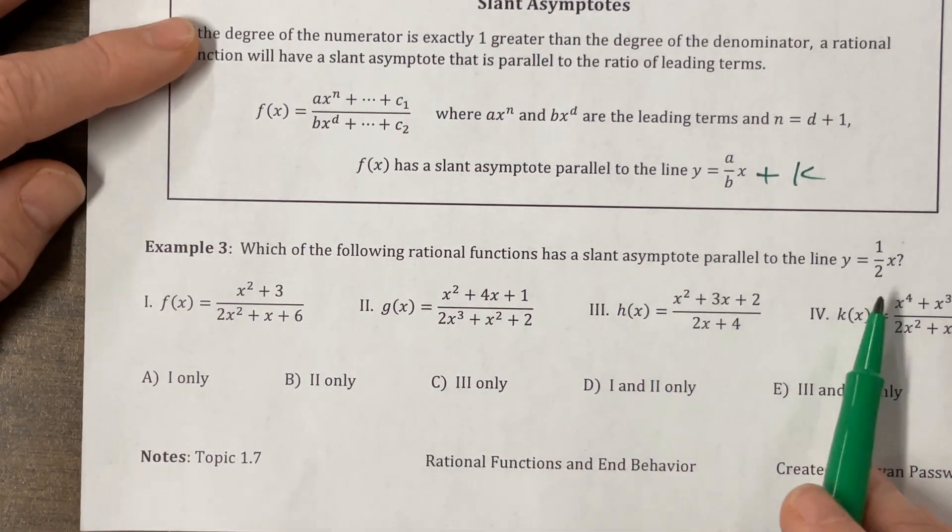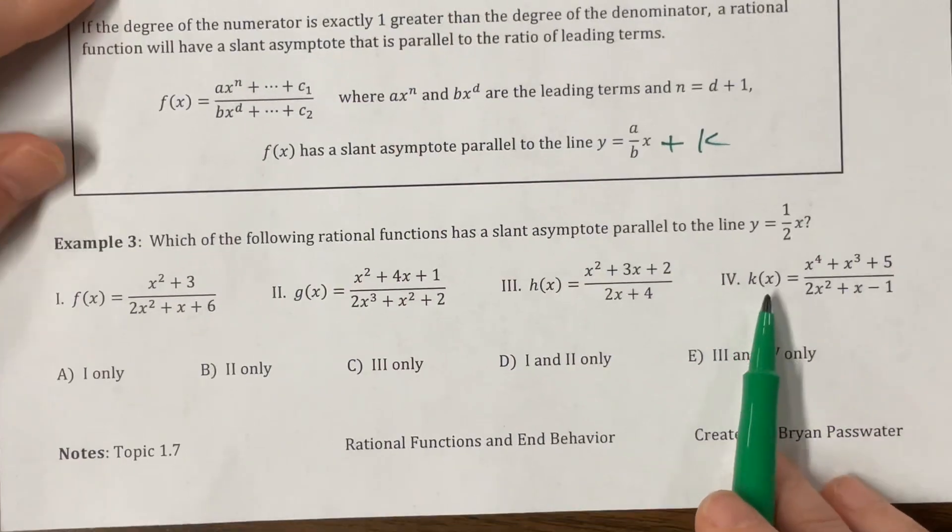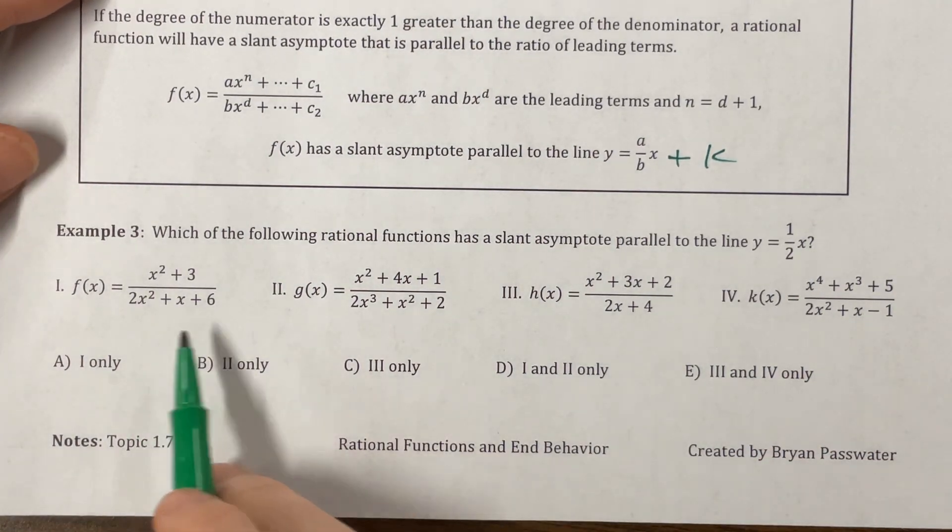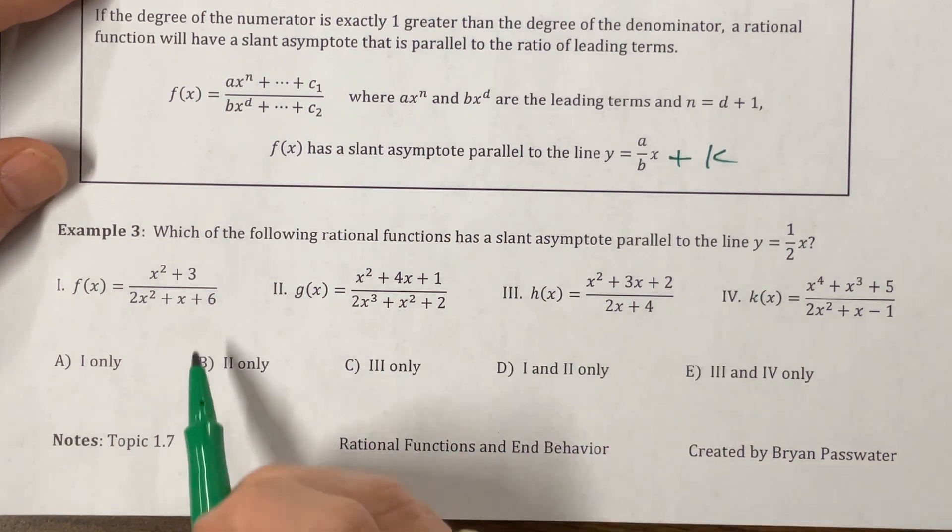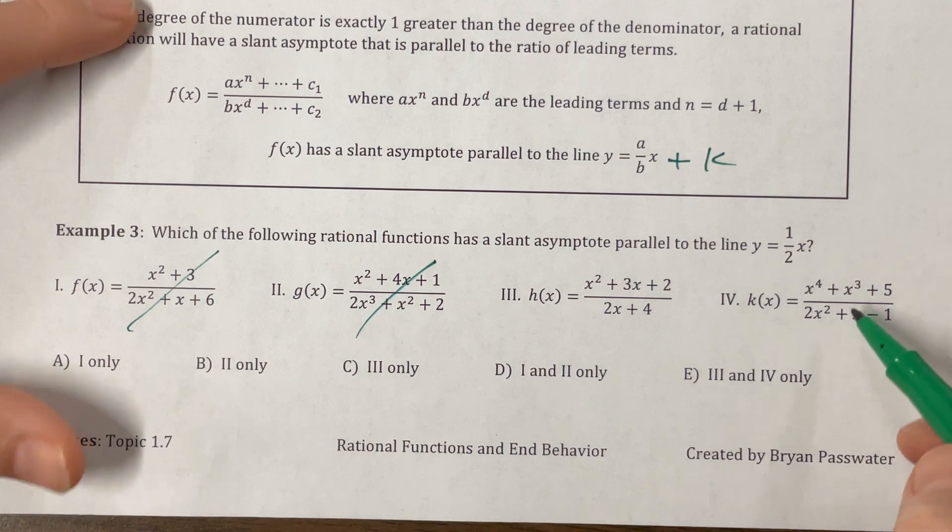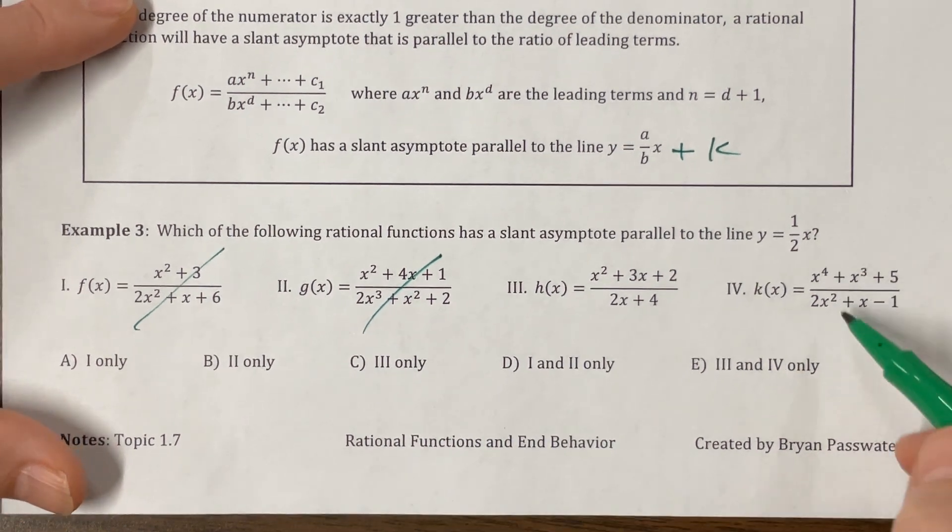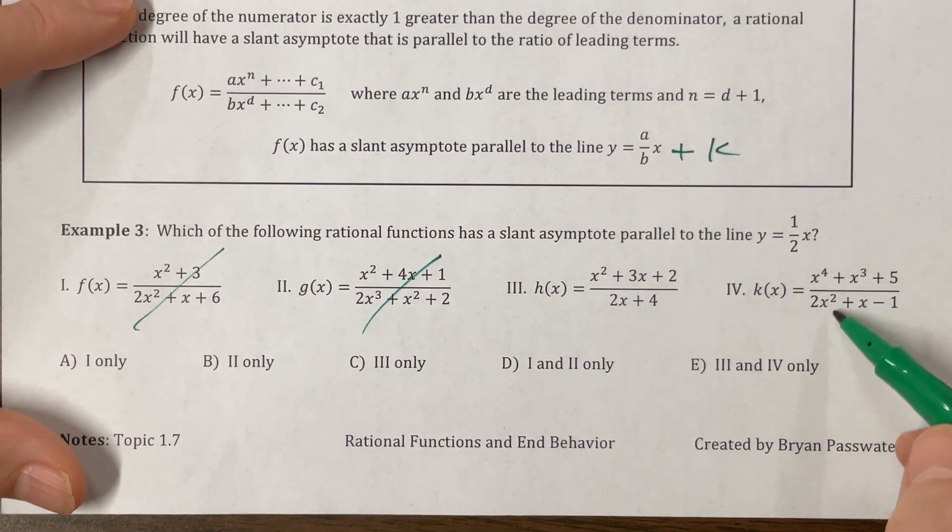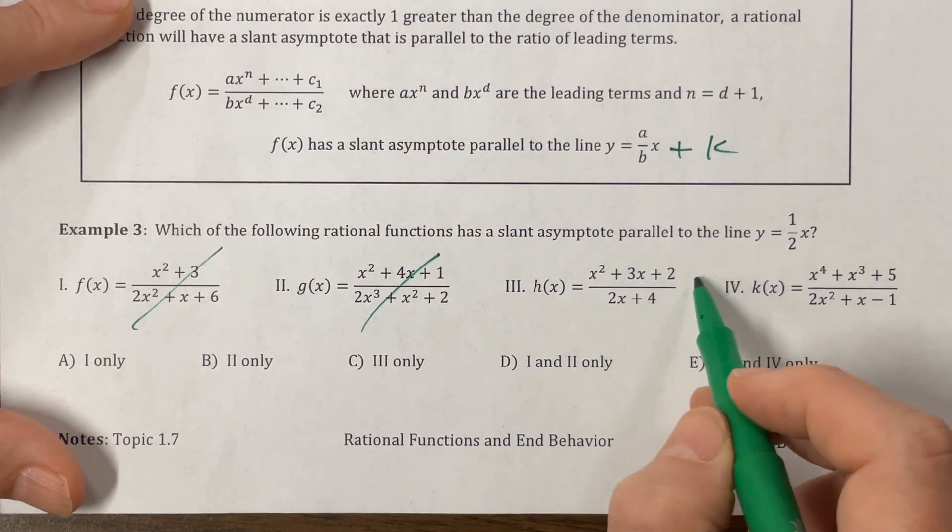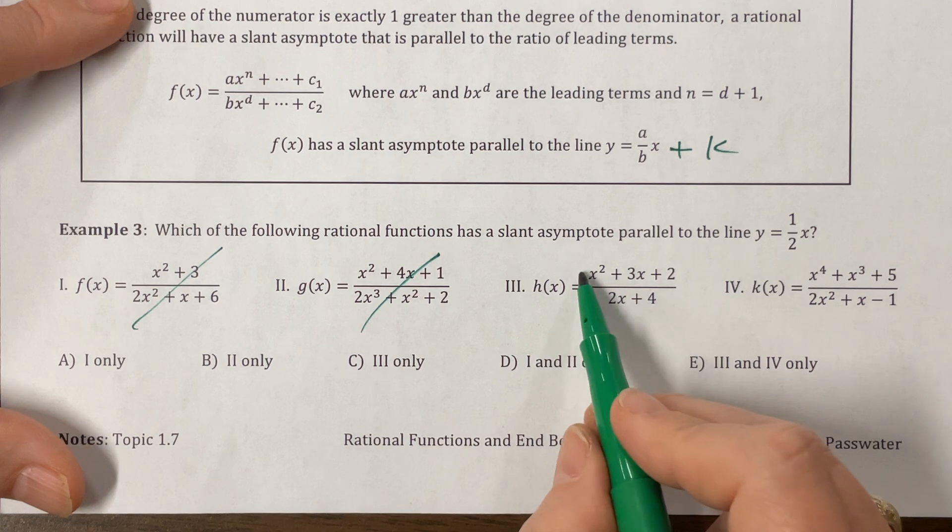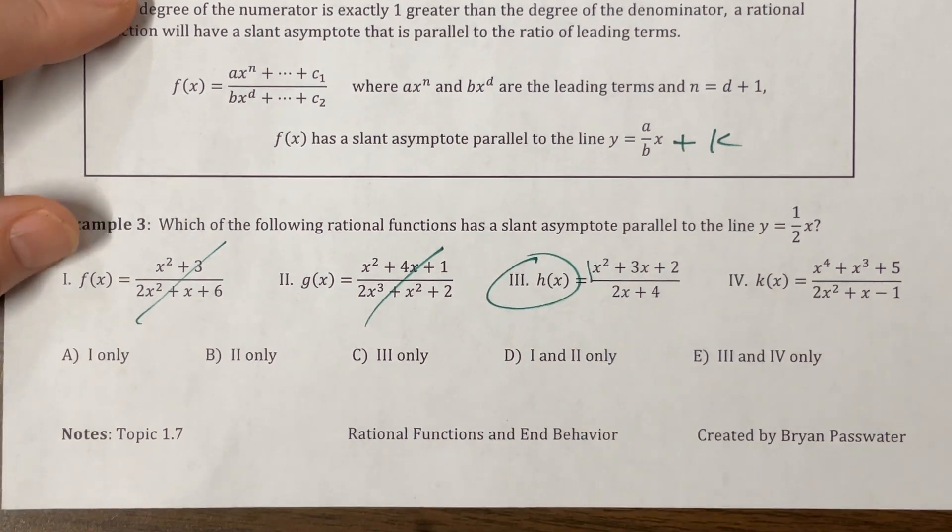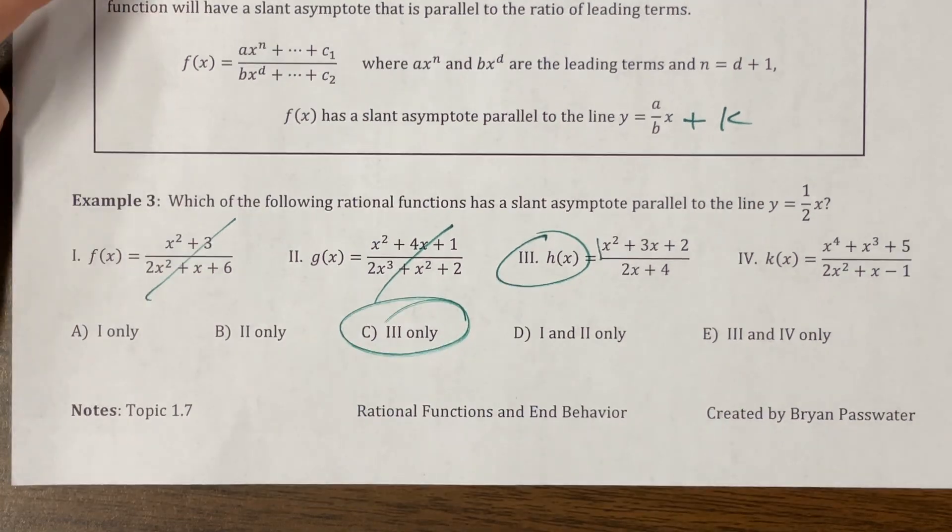Okay. Which of the following has a slant asymptote that is parallel to the line y equals 1 half x. Well, we need something that is top heavy. So you are not top heavy. You are not top heavy. You are top heavy. You are top heavy, but your degree off is 2. So this is going to be a parabolic asymptote, which is kind of cool. So it's got to be this one. And let's make sure our leading coefficient is 1 over 2, and that's correct. Okay. So 3 only is correct. Those are fun.